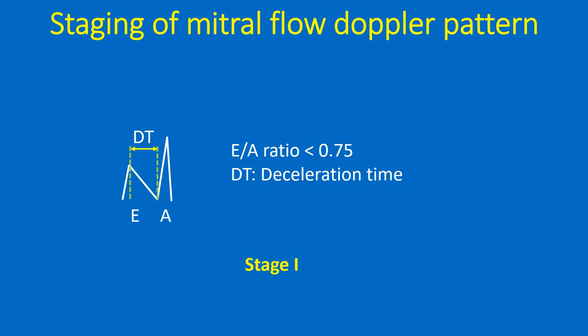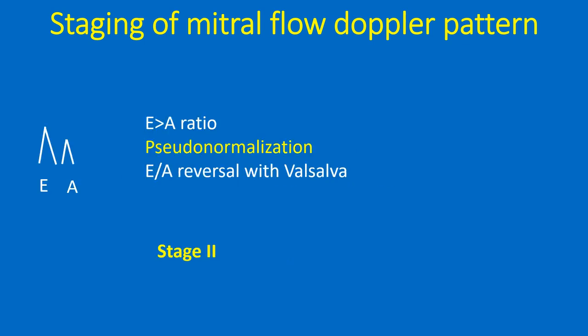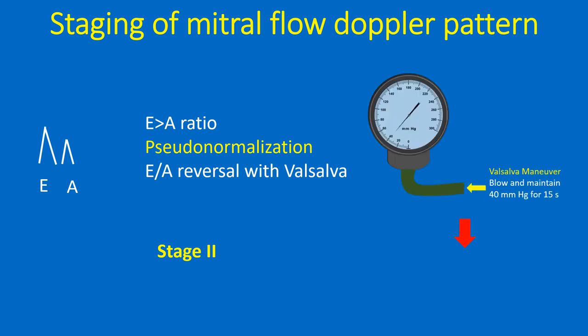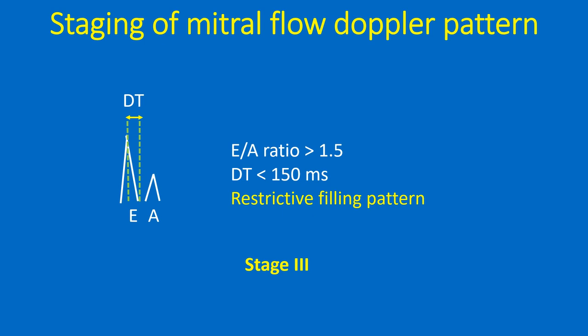The deceleration time (DT) of early diastolic filling is normally less than 220 ms and is prolonged in diastolic dysfunction. These Stage 1 patients are generally asymptomatic. In Stage 2 diastolic dysfunction, the E-wave becomes taller due to elevated left atrial pressure — called pseudo-normalization of the filling pattern — and E-by-A reversal can still be demonstrated during Valsalva maneuver. In Stage 3, the E-wave is very high so that the E-by-A ratio is more than 1.5 and DT is below 150 ms.